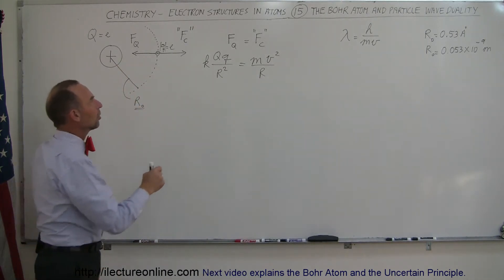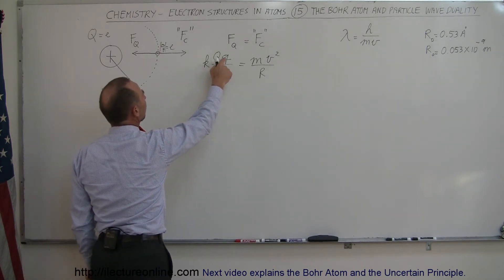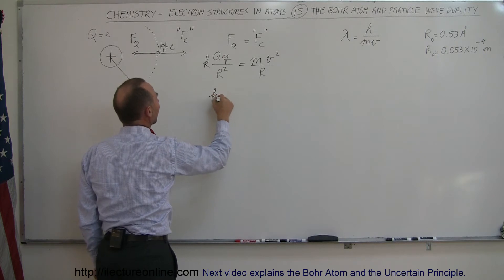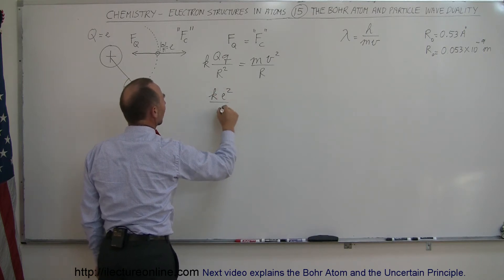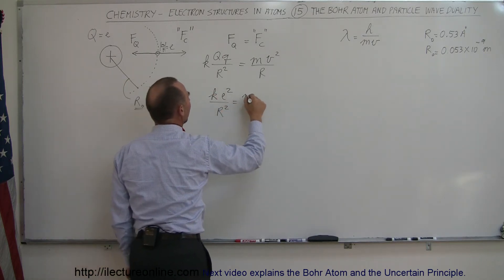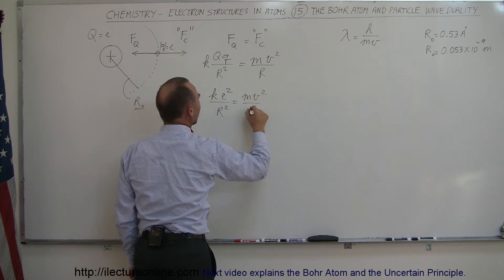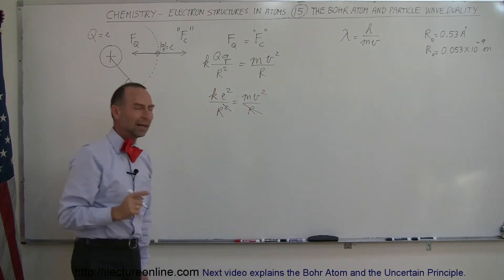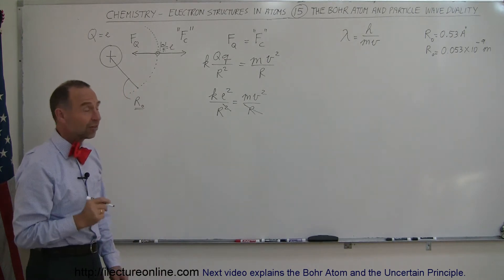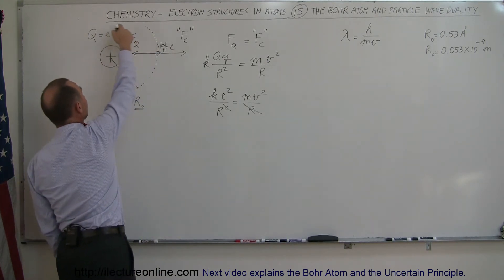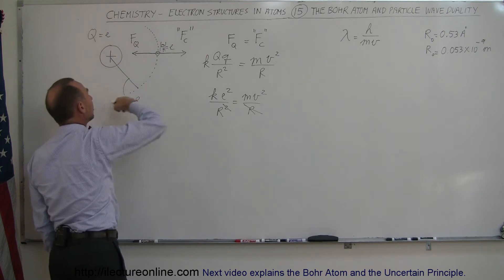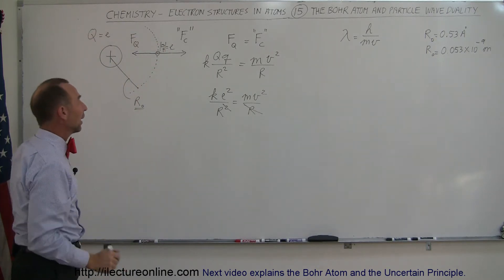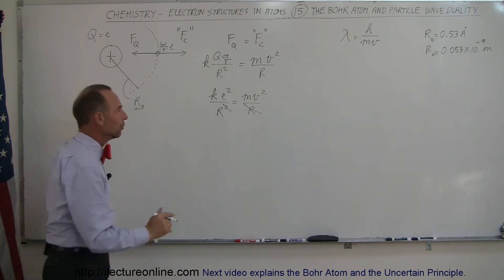Remember that we call the charge of the proton and the charge of the electron simply e. So this can be written as k times e squared divided by r squared, equal to mv squared divided by r. Right away, we can cancel one factor of r from each side. Now we're going to solve that equation for the velocity — that will be the velocity the electron has to have in the Bohr atom to stay in orbit around the nucleus from a classical point of view.